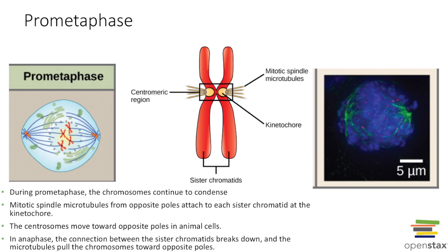The step between prophase and metaphase is called prometaphase. During prometaphase, chromosomes continue to condense and become very compact. The spindle fibers, coming off the microtubules, connect to the kinetochore — a section inside the centromere region where the sister chromatids are attached. The centrosomes have moved to opposite poles of the cell.